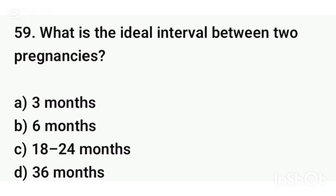Question number fifty-nine. What is the ideal interval between two pregnancies? The correct answer is option C: 18 to 24 months.